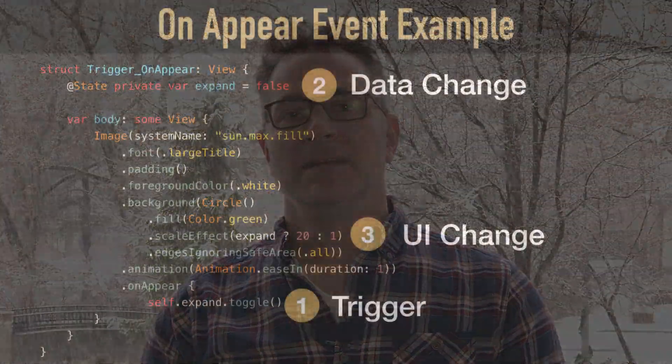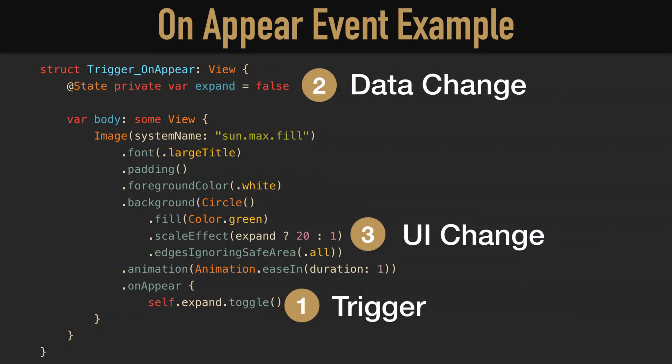Let's take a look at an example with the scaleEffect property. A view can be one size, but when a variable changes to true, you can scale it to make it bigger or smaller. That scaleEffect modifier is going to be looking at that variable — if it's true, it's going to make it bigger; if it's false, it's just going to stay at the normal size.